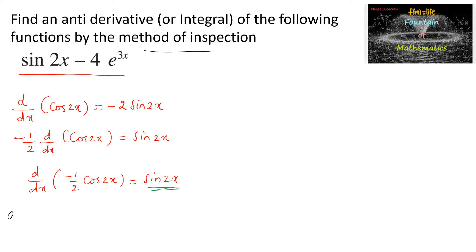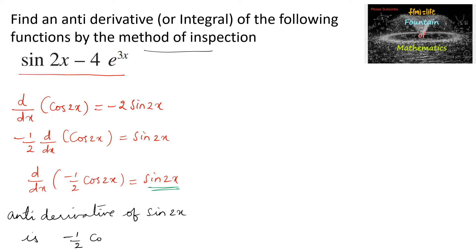From here we can say that the anti-derivative of sin 2x is minus 1 by 2 cos 2x. Now let's find the anti-derivative of the other part of the function.